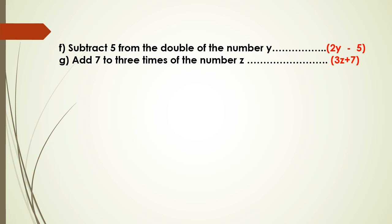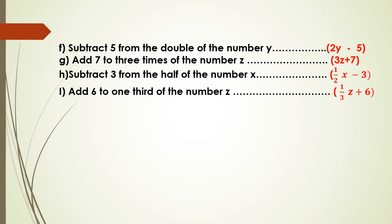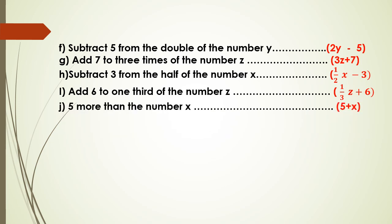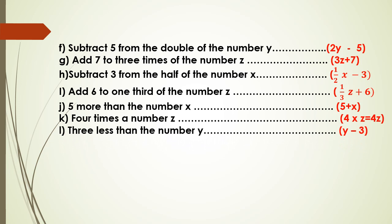Add 7 to three times the number z: it will be 3z plus 7. Subtract 3 from half of the number x: it will be one-half x minus 3. Add 6 to one-third of the number z: it will be one-third z plus 6. Five more than the number x: five plus x. Four times a number z: 4z. Three less than the number y: y minus 3.